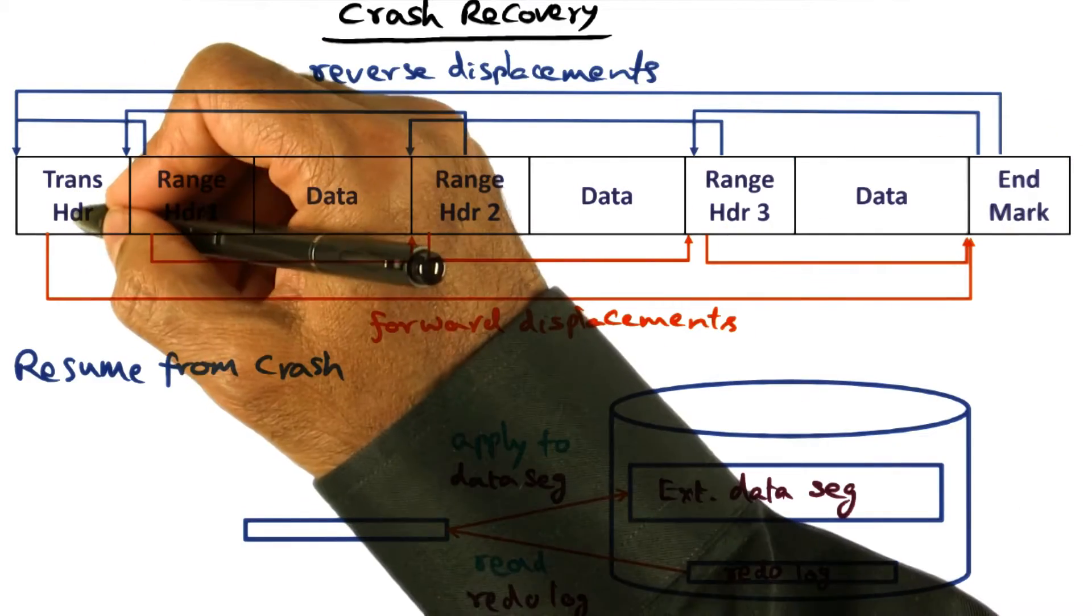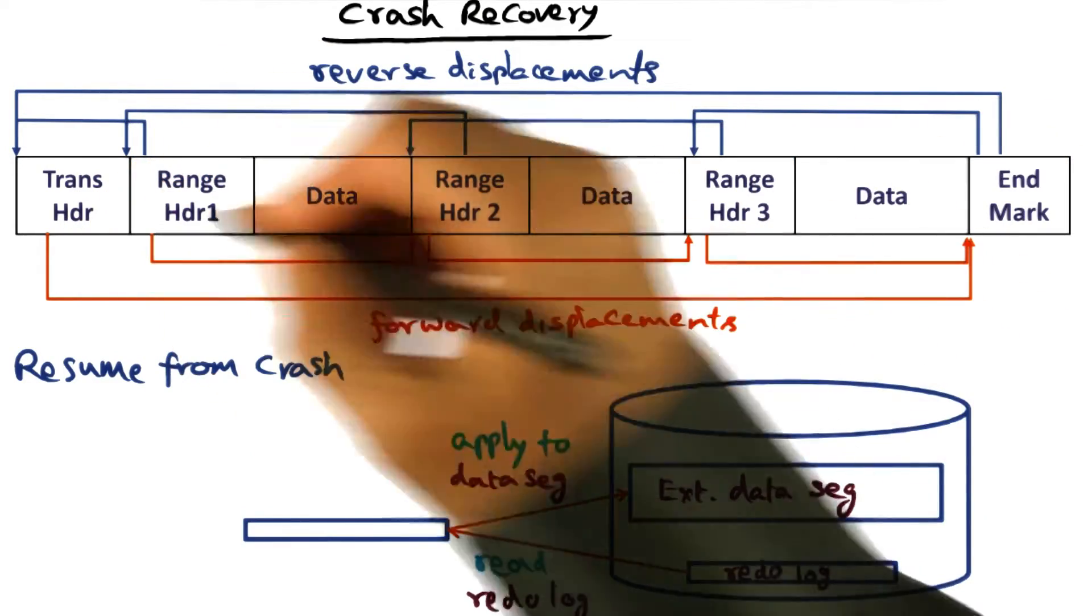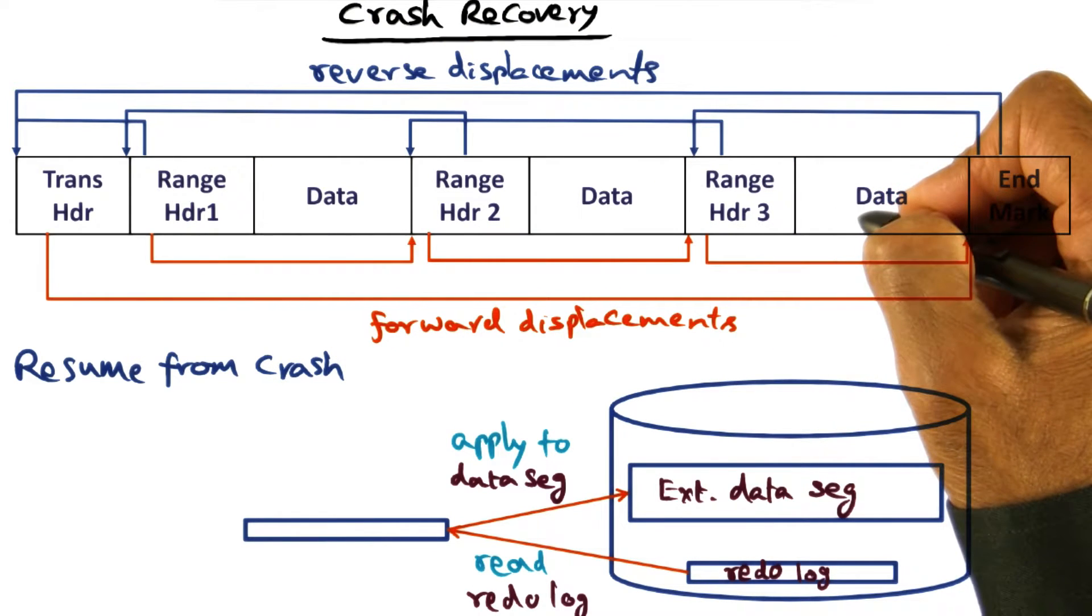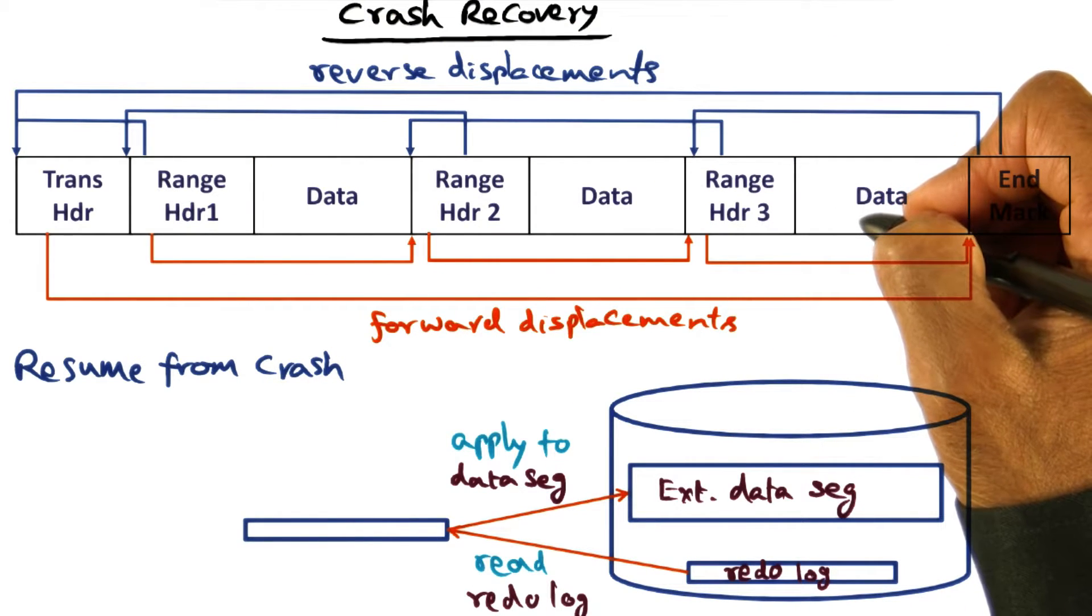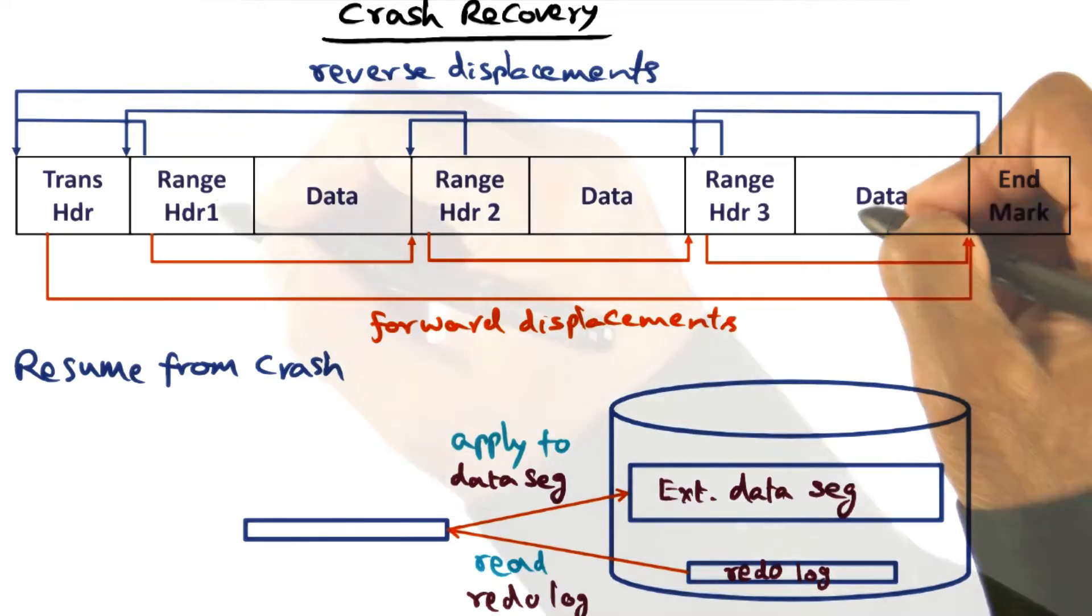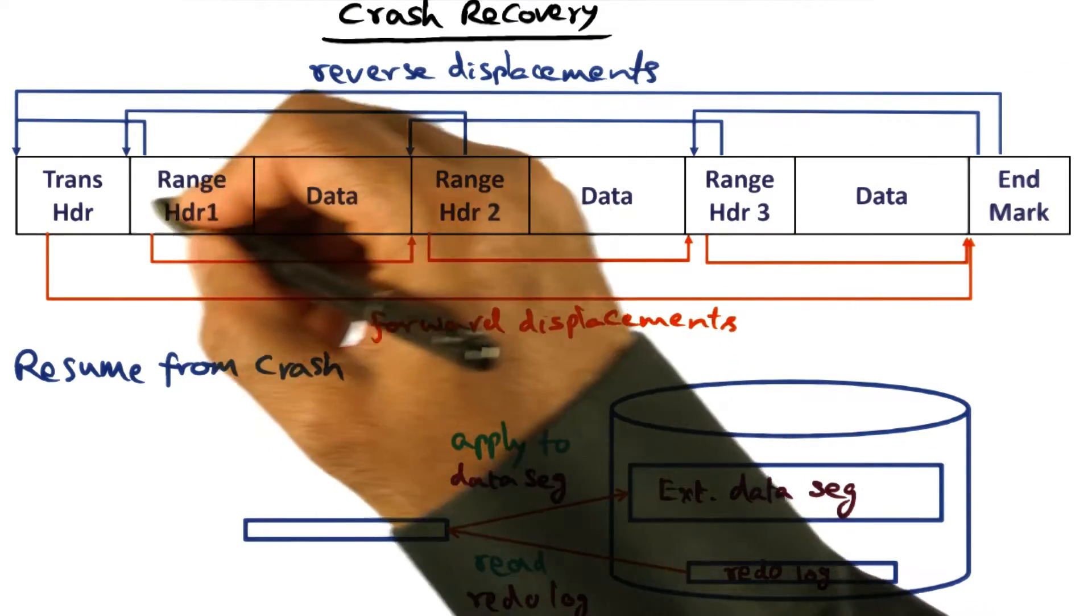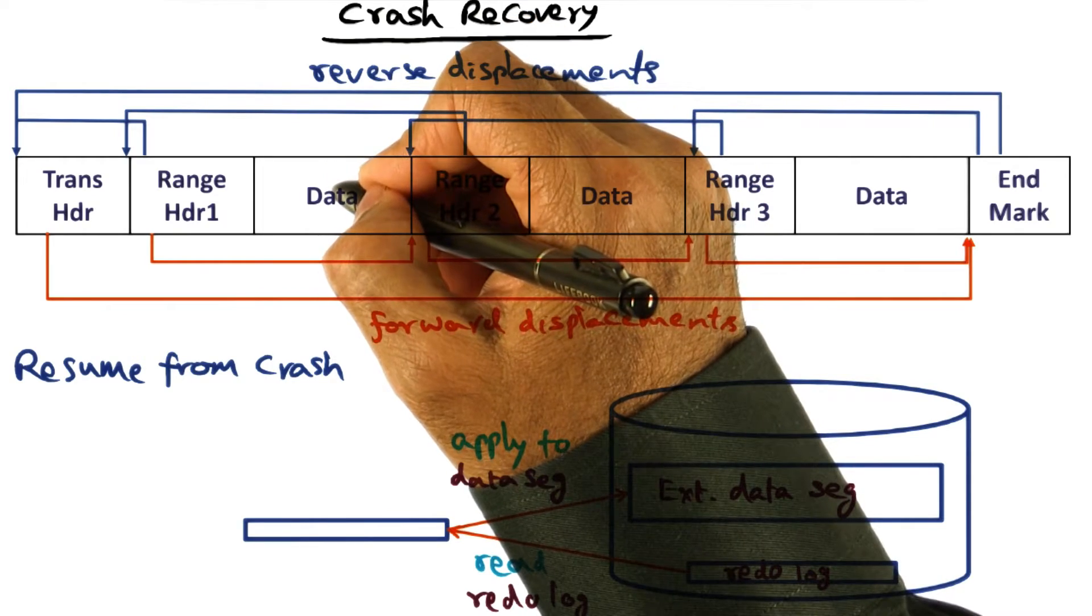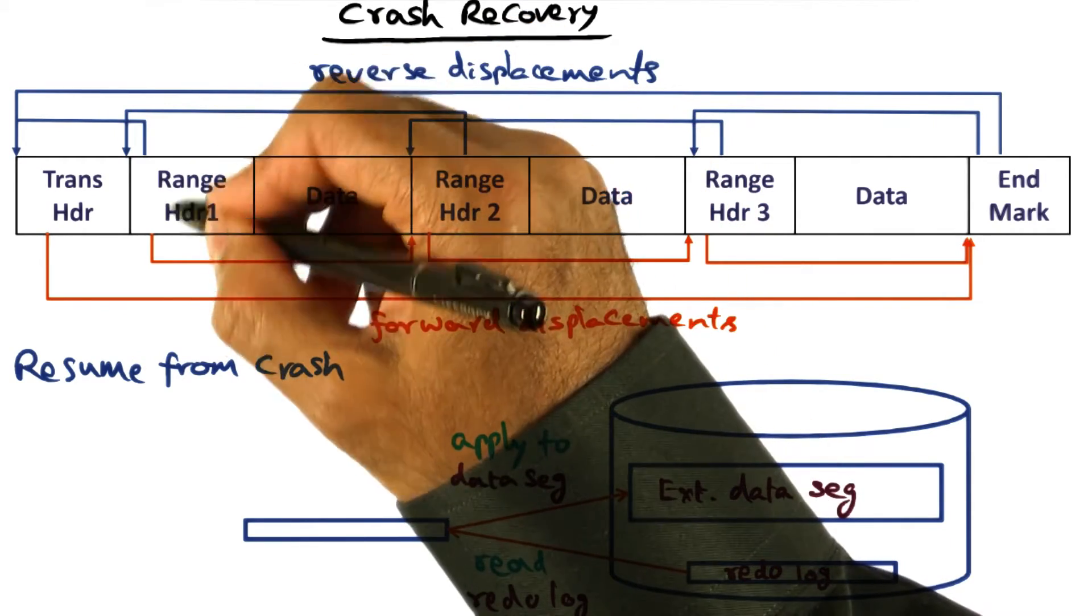If you look at the redo log, it has a transaction header. In between the transaction header and the end mark are all the changes that have been made in that particular critical section by the developer. For each address range within that critical section, what is the new data that corresponds to the changes that have been made to that range?